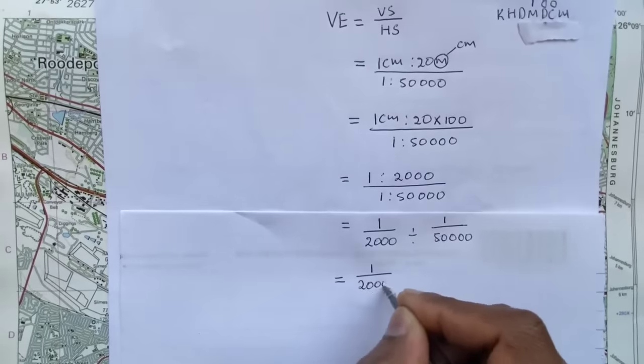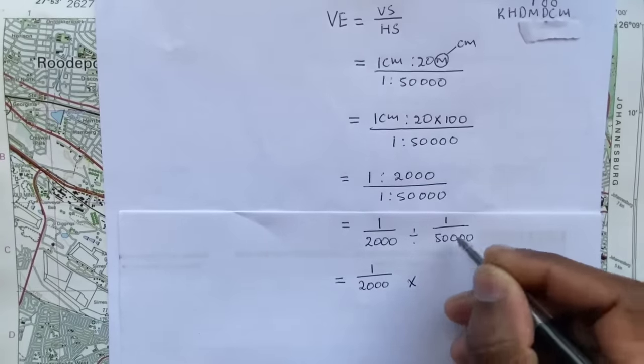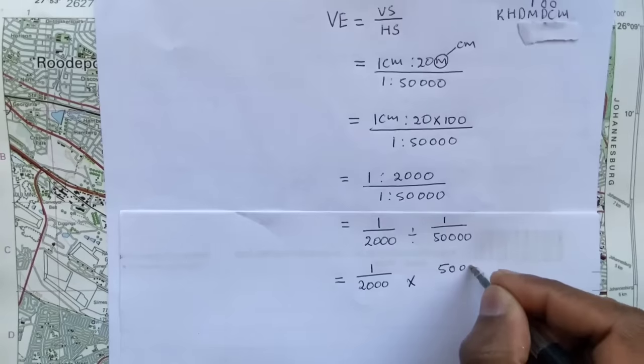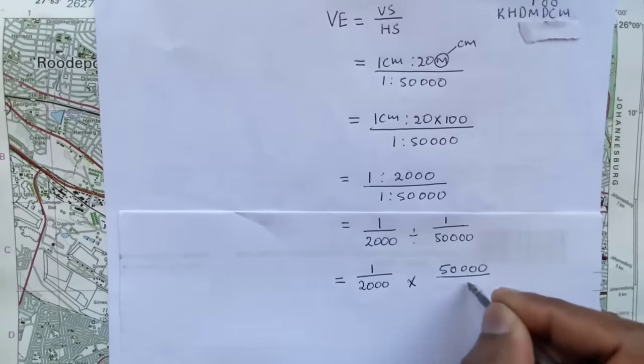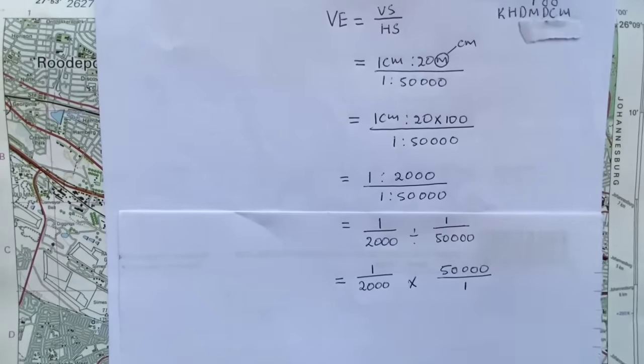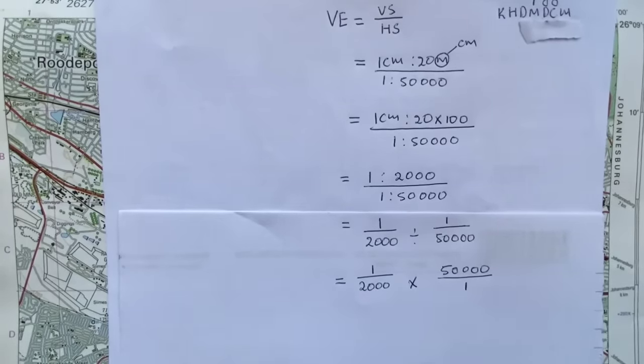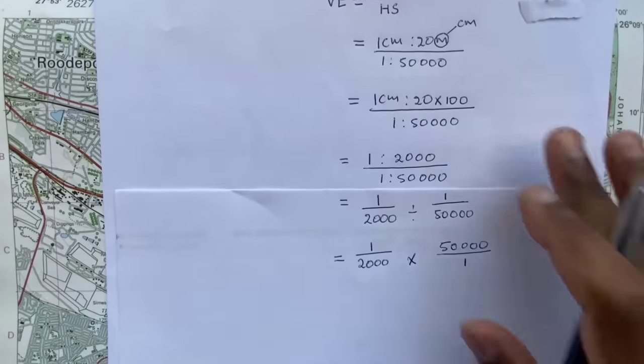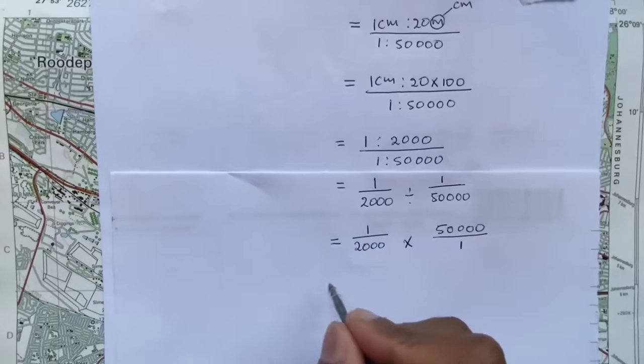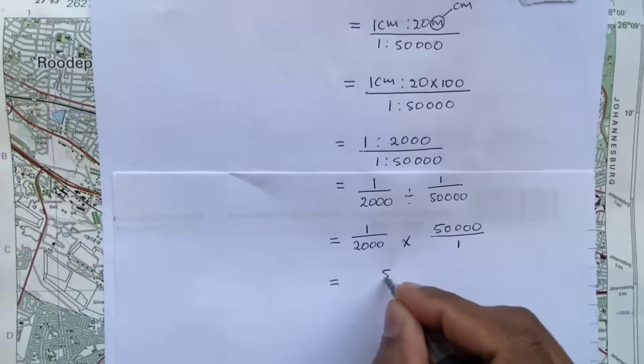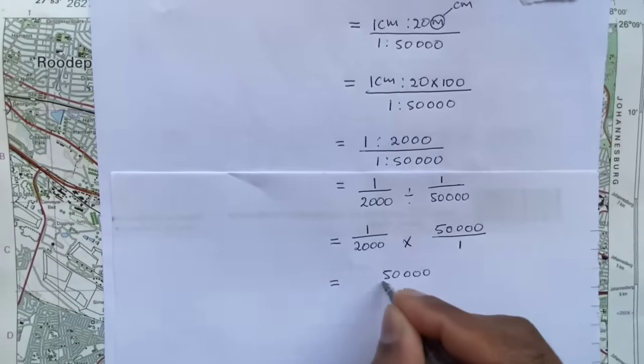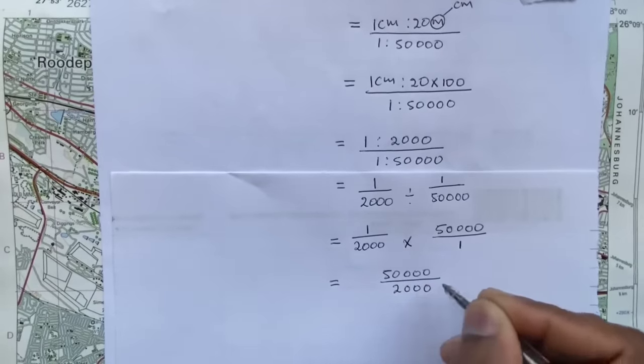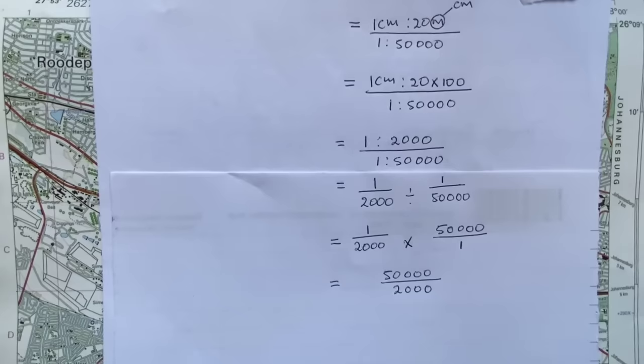And mathematically I can change this division sign into a multiplication. So if I do that, I'm gonna say one divided by 2,000 times, and this just changes, meaning it becomes 50,000 divided by one. So I can write this as 50,000 divided by 2,000.